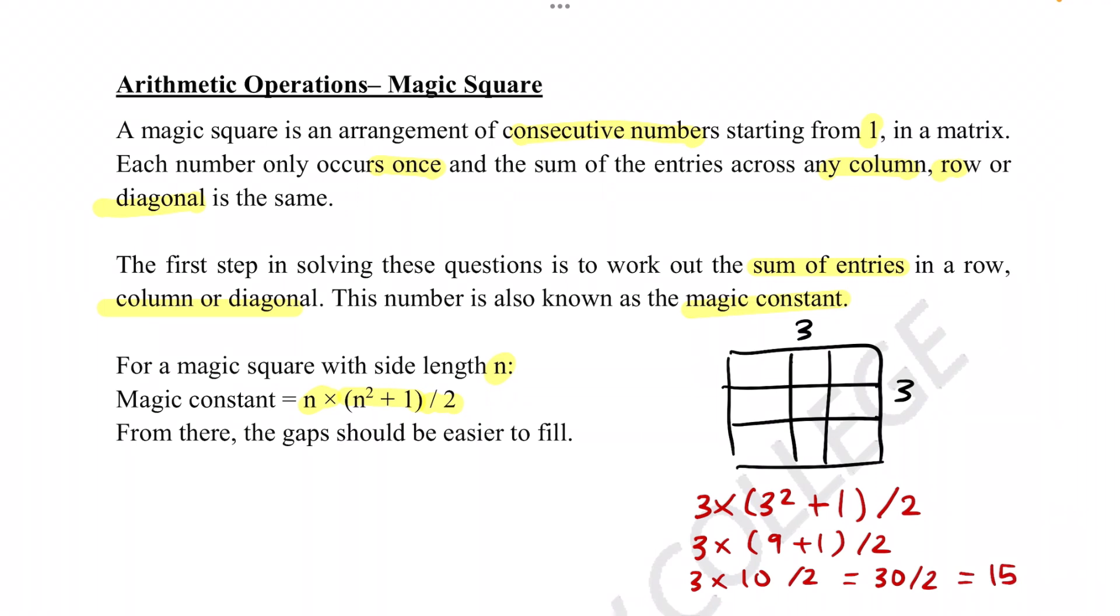So the magic constant would be 15, meaning whatever number we put in here should add up to 15. In a hypothetical question, let's say these numbers are substituted in this magic square. Now we know the sum of each line would be 15, so all we have to do is simple addition or subtraction. 15 minus 6 minus 2 would equal 7, so we know that would be 7 up here.